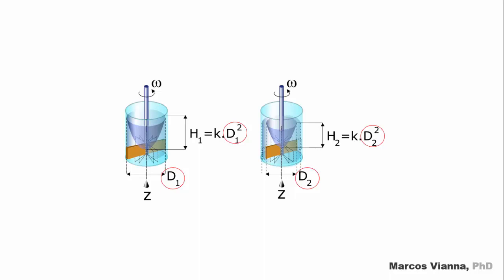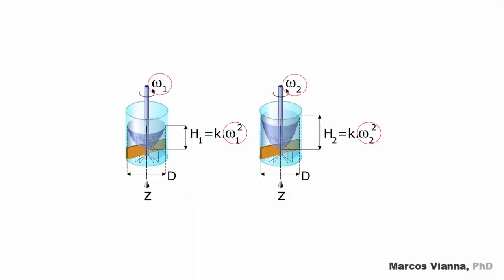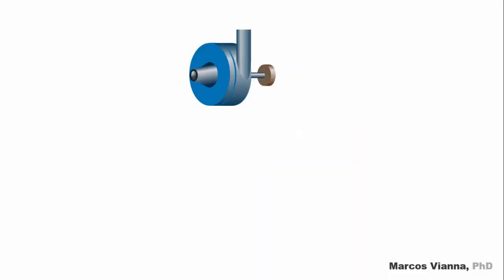We can now make two observations that will be important in the study of pumps. The first is that the height that the water can go up inside the cylinder will depend on the impeller diameter. The height will vary with the square of the diameter. Also, it will vary with the square of the impeller rotation velocity.